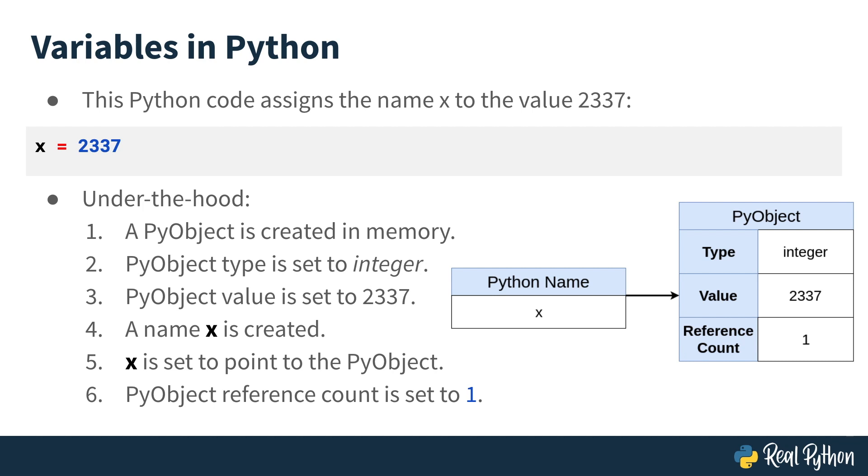The type is set to integer, and its value is set to 2337. Then a Python name is created, called x, and that points to this PyObject.